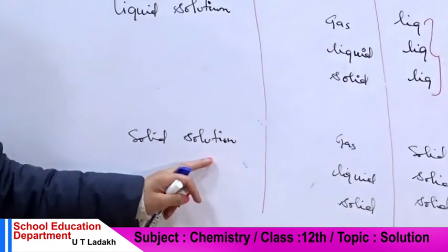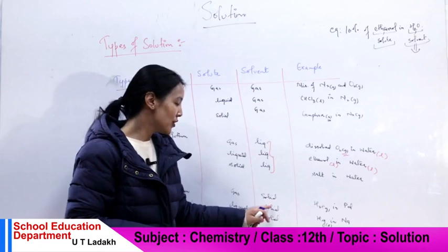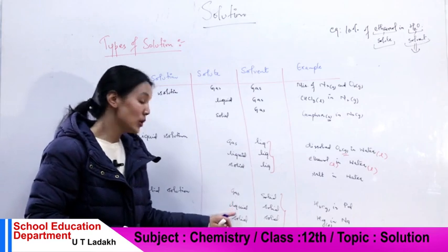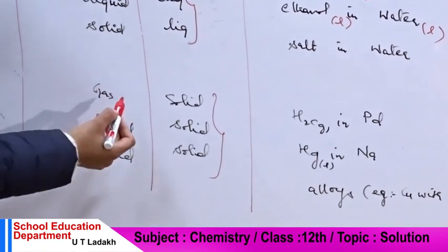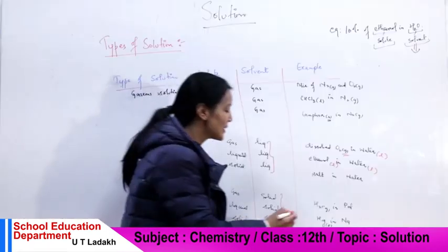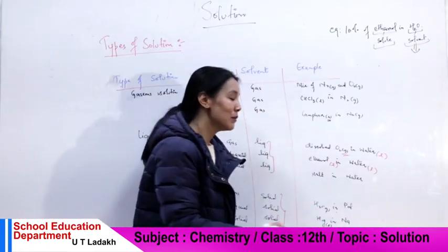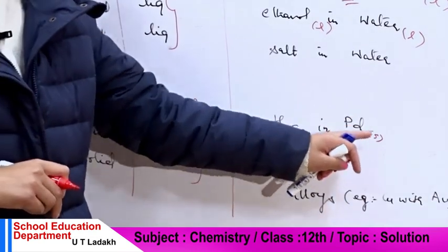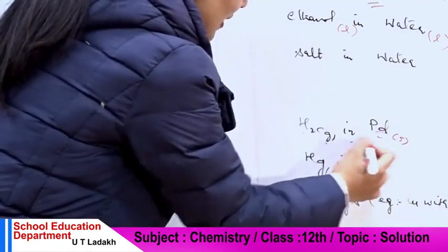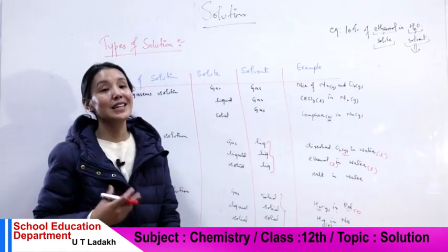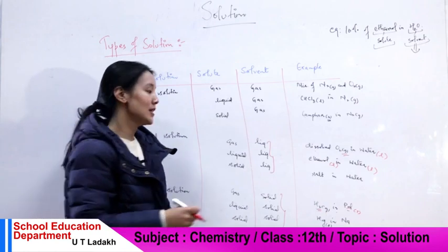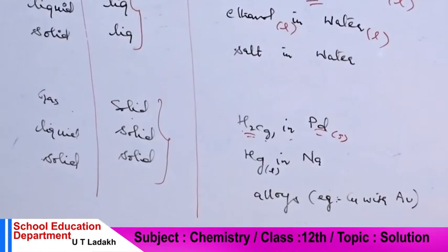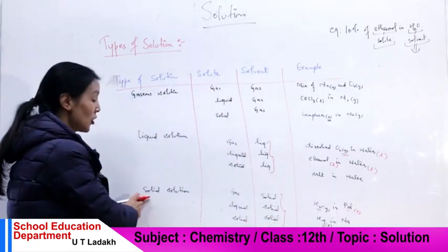For solid solutions, the solvent should always be solid, and the solute can be gas, liquid, or solid. An example of a gas in solid solution is hydrogen gas in palladium. Palladium is used as a catalyst in organic reduction reactions, and hydrogen exists in gaseous state within it.